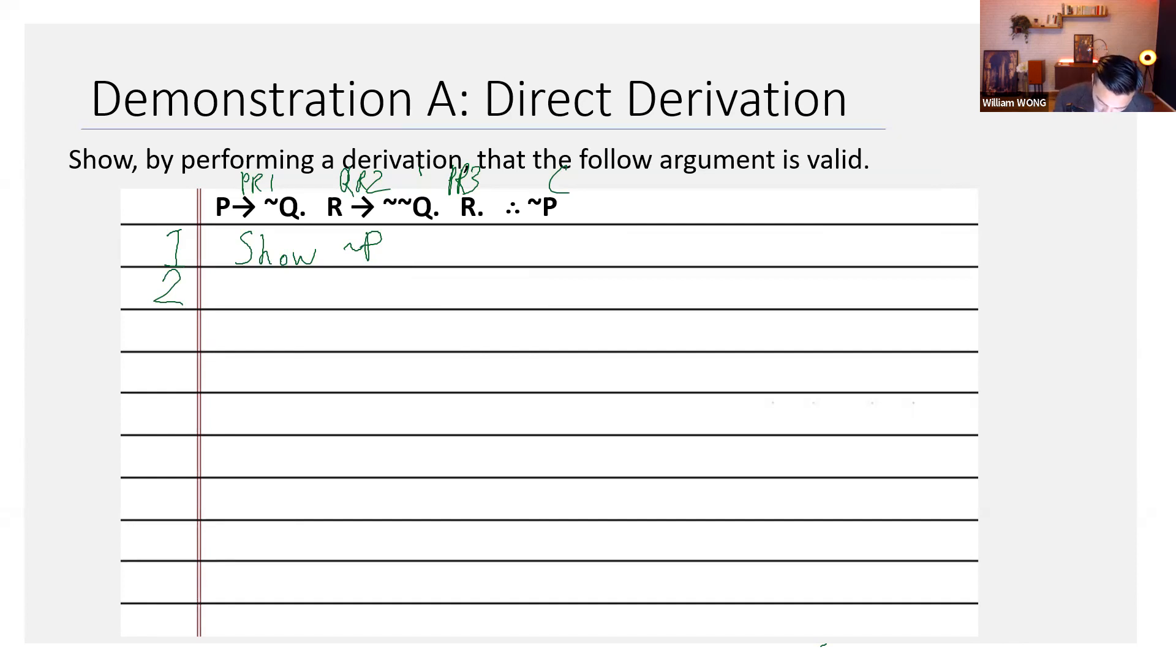So, one thing you might want to do is pull premise two down and say R entails not, not Q. And you justify it.